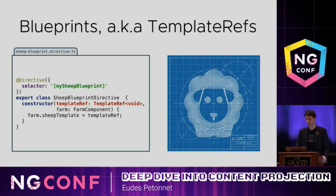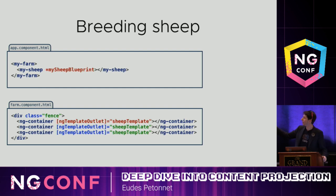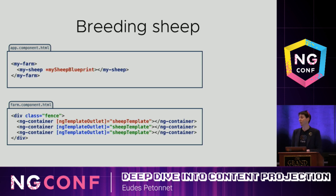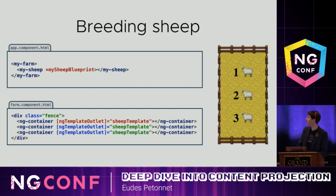On the application side, you put your farm and put your sheep inside with that structural directive. What you're giving the farm is not an actual sheep — it's a model of how to create sheep. In the farm template, instead of three ng-contents, we use three ng-template outlets, which is the directive Angular provides to easily stamp out a template ref. And when we do that, we get our sheep one, two, three — passing only one as part of the app but getting three displayed.